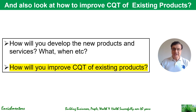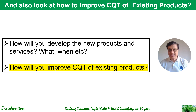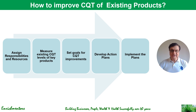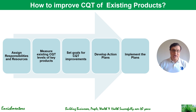Now let's look at existing products — how do you improve cost, quality, and time? How do you ensure that continuously you and your team are improving cost, quality, and time for existing products? Again we have a simple process as an overview. You need to assign responsibility and resources — as an R&D director you say who is responsible for which product for continuous improvement. The first step is to set up a measurement system where you can measure the existing cost, quality, and time levels of key products. Then you set goals for improvements — what levels do you want to reach — then develop action plans and implement them.